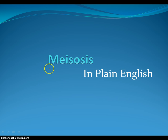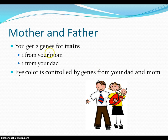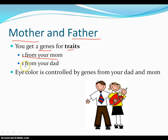Hey guys, this is Mr. Herbst and this is meiosis in plain English. We all know that we have a mother and a father. What's interesting is that you get two genes for every trait — you get one from your mom and you get one from your dad.